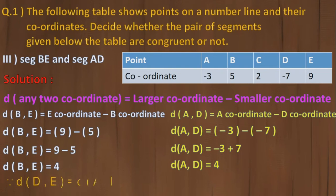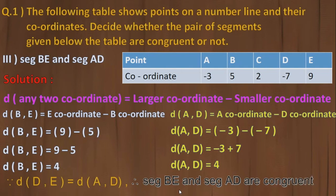Both values are the same, so BE equals AD. Therefore segment BE and segment AD are congruent — सर्वांगसम है.